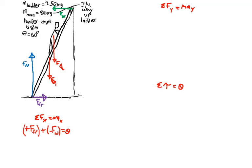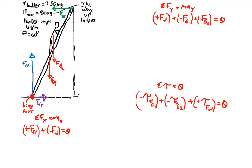So we have a positive force of friction plus the negative wall force, just like we had before. We have the positive normal force plus the negative force of gravity one plus the negative force of gravity two. And then we also have the torques from the person, from the ladder, and from the wall.